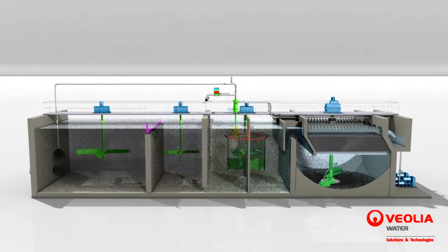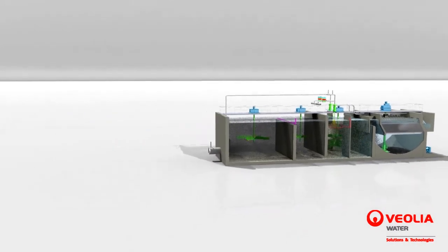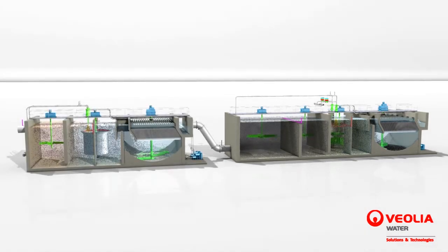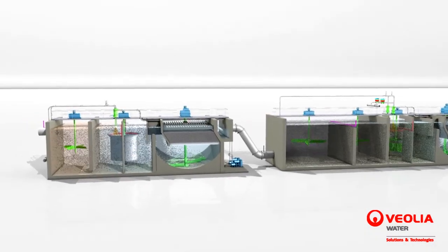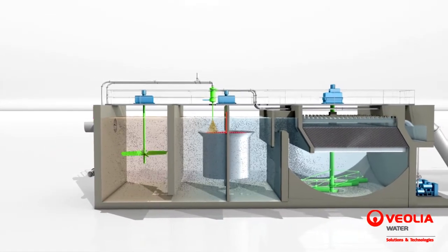Based on raw water composition and treatment objectives, the process is also available in the Actiflow Twin Carb configuration. This unique design consists of two Actiflow units in series, allowing optimum overall treatment performance and reduced consumption of activated carbon.